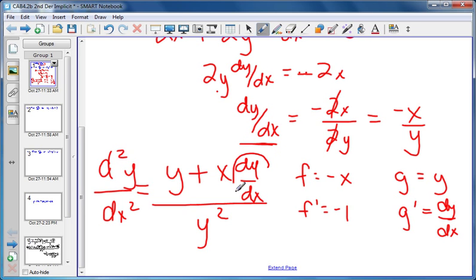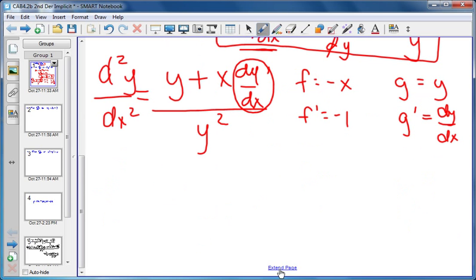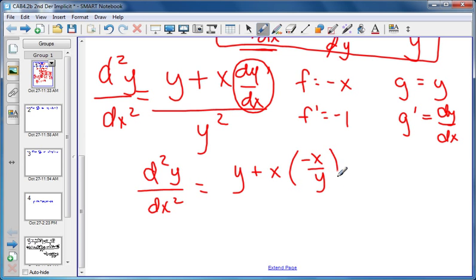We cannot have dy/dx in our answer, so we need to replace that because we know that dy over dx is equal to negative x over y. So the only step we have left is to substitute negative x over y in for dy over dx. Our final answer will be that the second derivative is equal to y plus x times negative x over y, all over y squared.